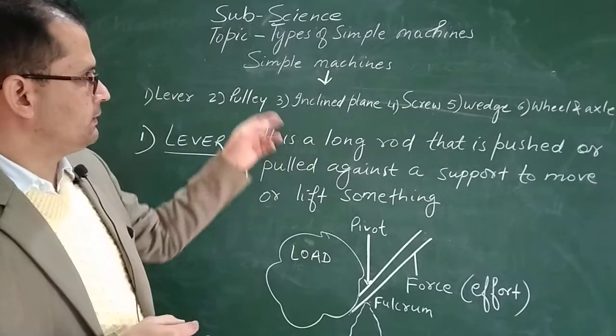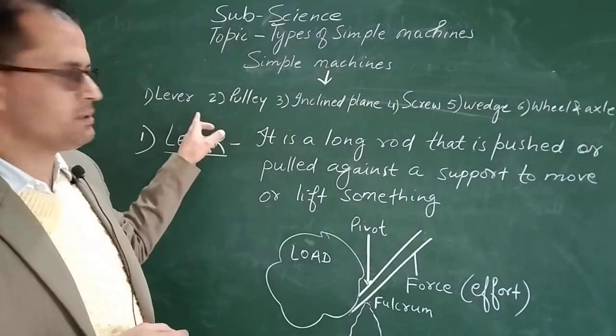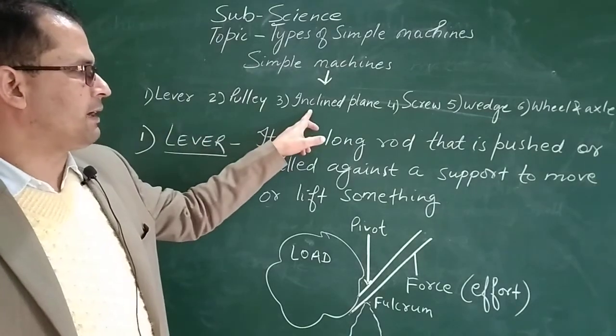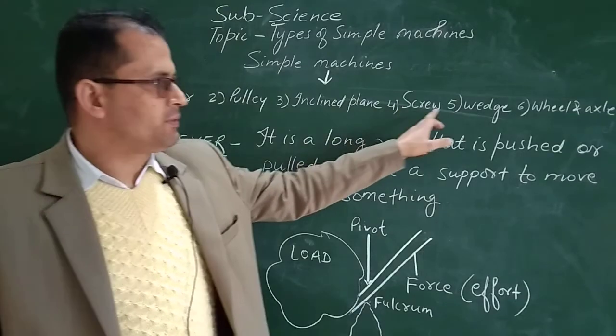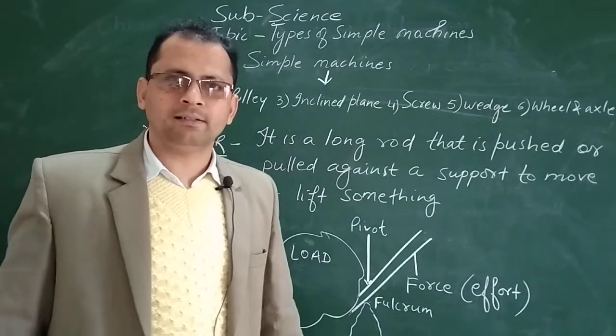Now you can see here, these simple machines are of six types. First is the lever, second is pulley, third is inclined plane, fourth is screw, fifth is wedge, and the last, that is sixth, is wheel and axle.